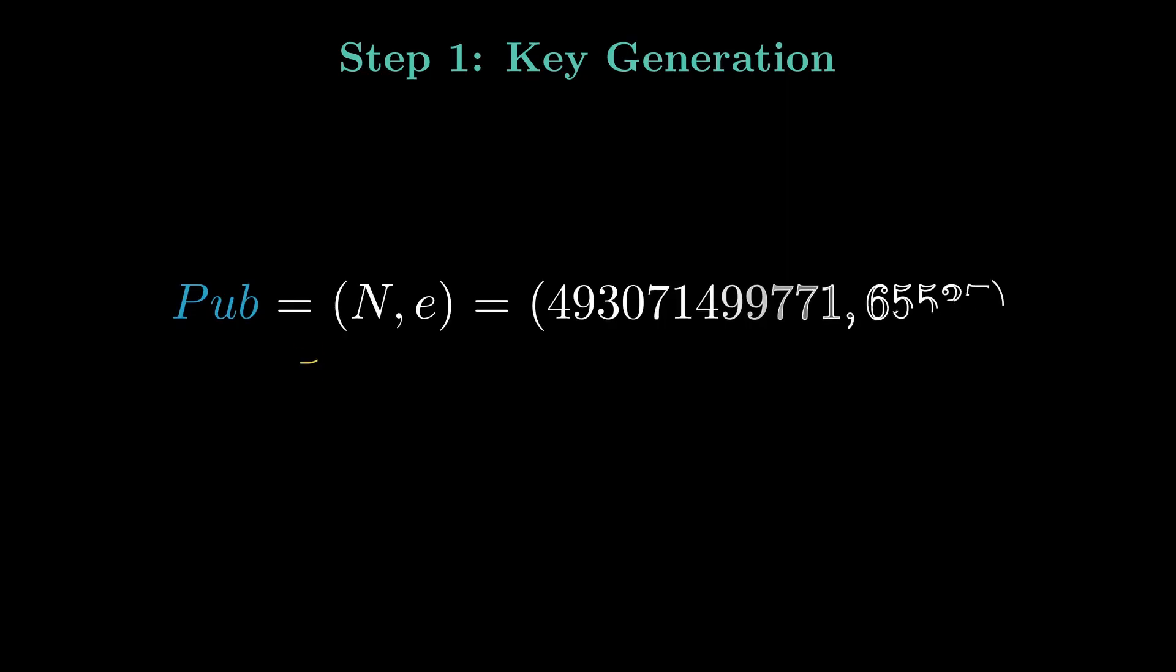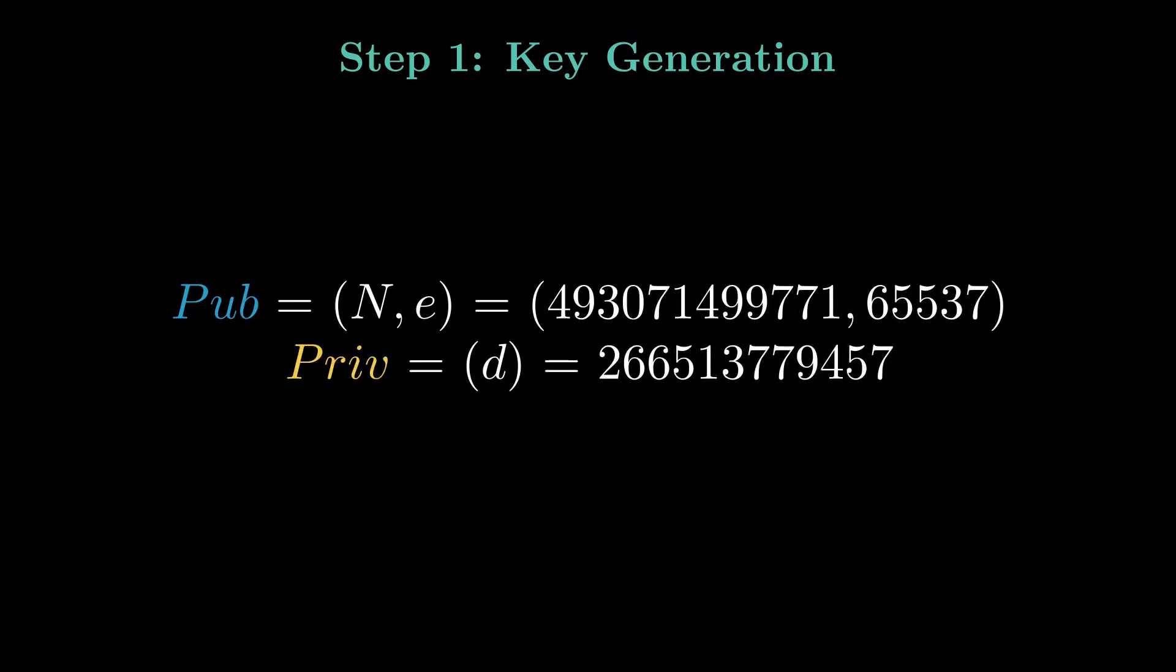The public key is the pair (n, e). This key is shared publicly and used for encryption. The private key is d. This key is kept secret and used for decryption.